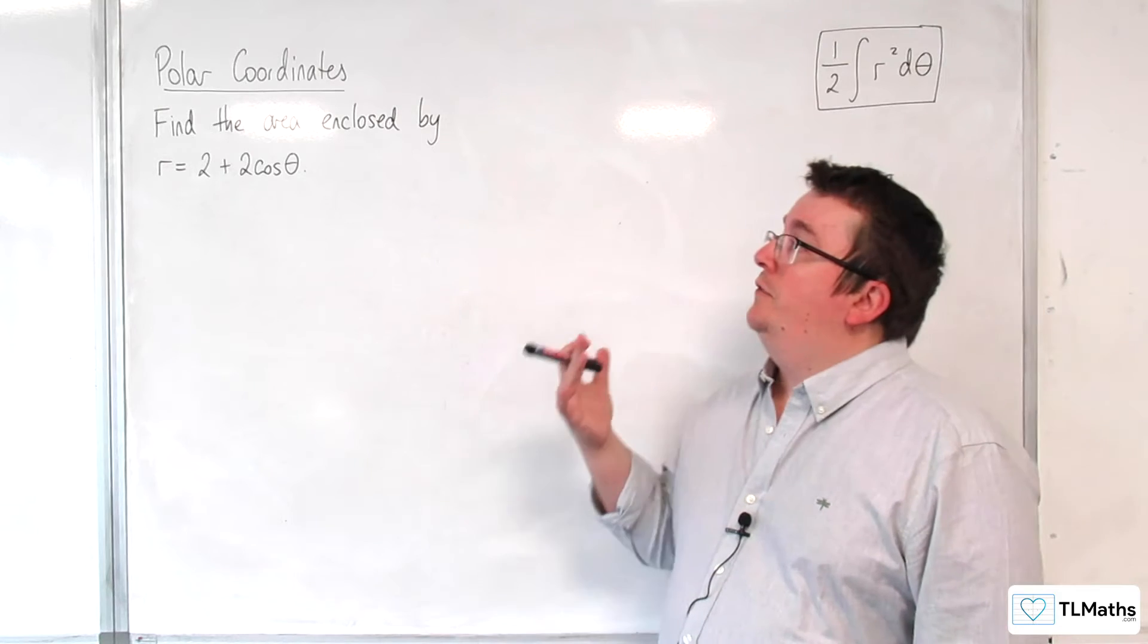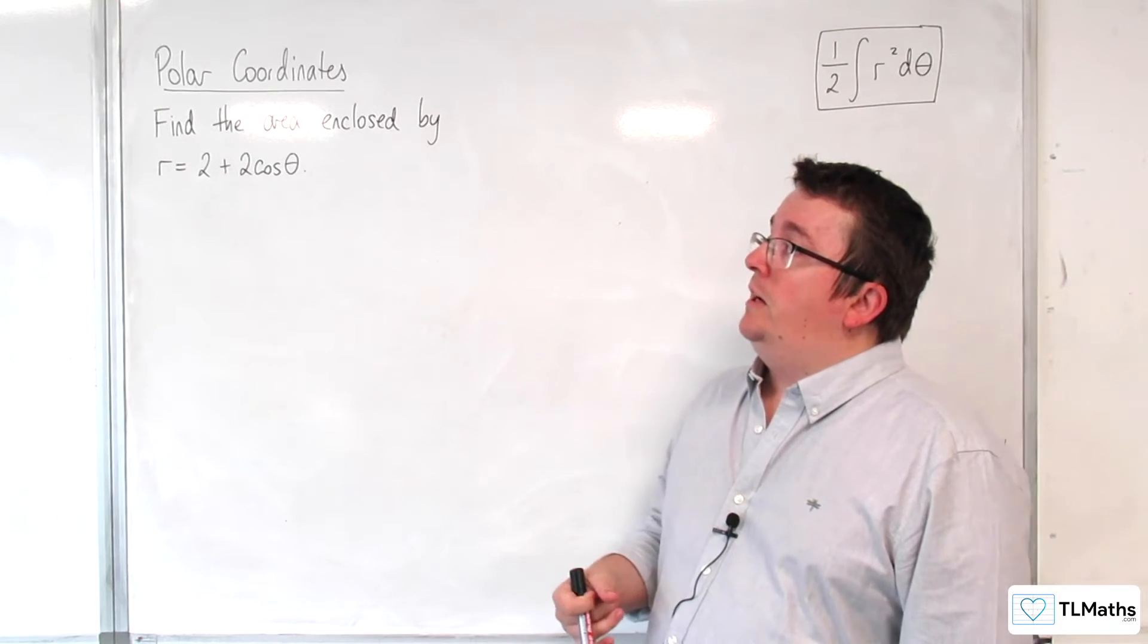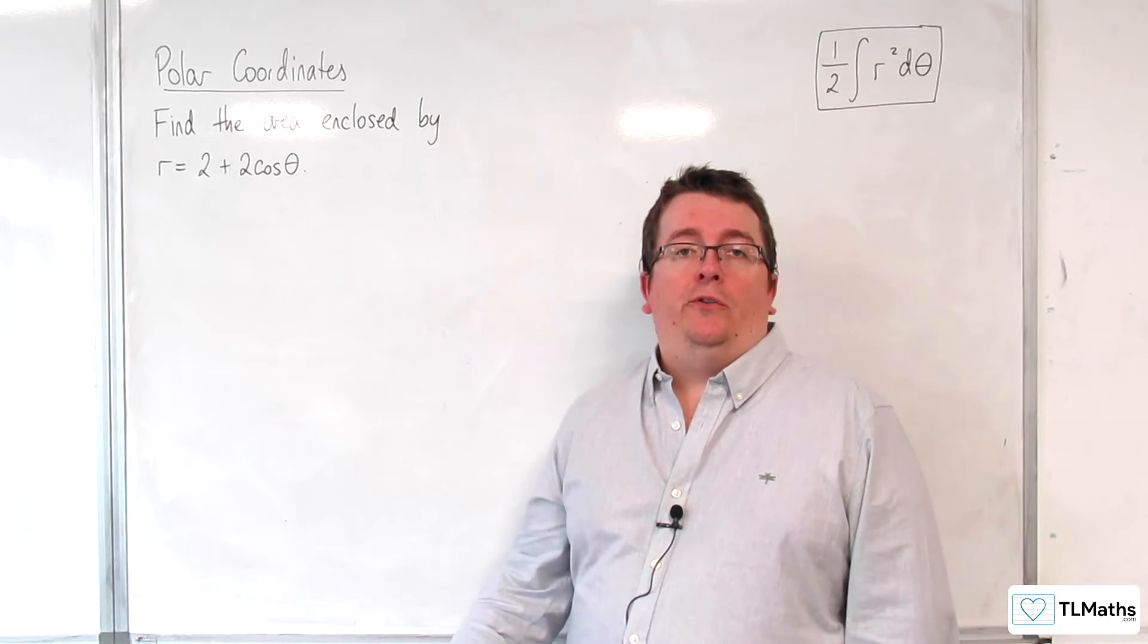In this video we're going to be looking at finding the area enclosed by r equals 2 plus 2 cosine theta.